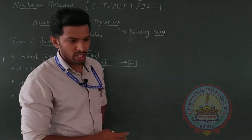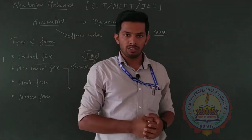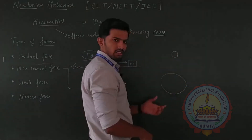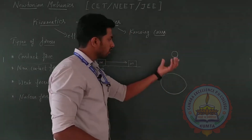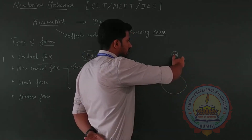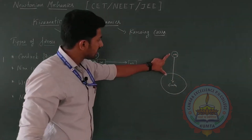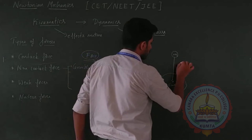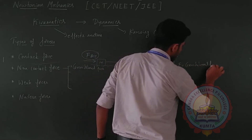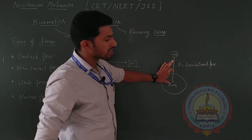Gravitational force is a force which exists between two masses. If this is the earth and here is some object with a certain mass m, there will be a force of attraction between the object and the earth, always acting towards the center of the earth. This attractive gravitational force is called the gravitational force. Since there is no contact between the two objects, we call it a non-contact force.